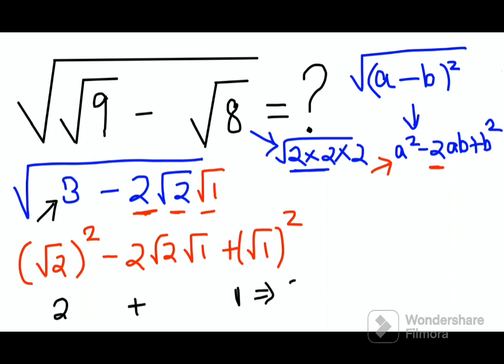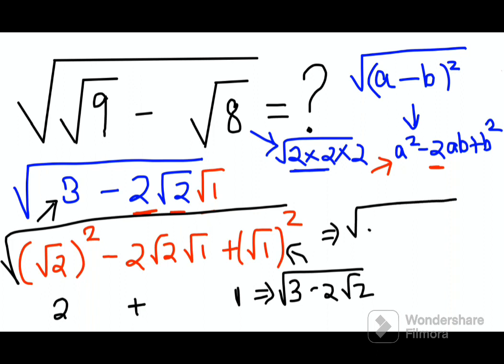So this actually now goes back to your question, which is 3 minus 2 root 2, but everything is still under a root. And using this expansion, I can say this is now coming out to be under root root 2 minus 1 the whole square, because this is coming out to be this expansion.